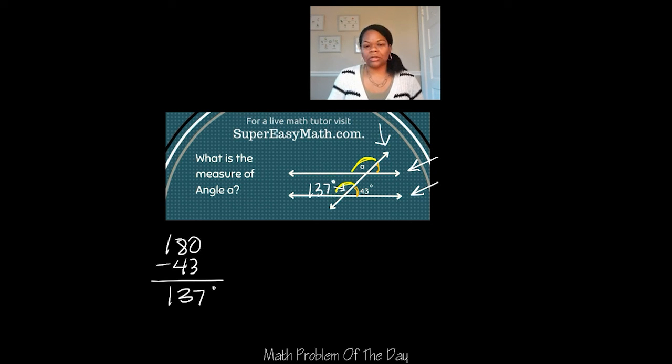Well, because we have this transversal line, both the 137 and the 43 degrees can literally just be placed in the new position up at the top. So this is 137 and this is 43.